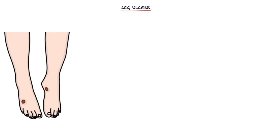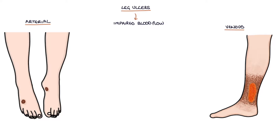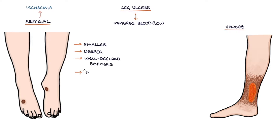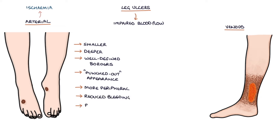Next, let's talk about leg ulcers. Leg ulcers indicate the skin and tissues are struggling to heal due to an impaired blood flow. Arterial ulcers are caused by ischemia secondary to an inadequate blood supply. Typically, arterial ulcers are smaller and deeper than venous ulcers, have well-defined borders giving them a punched-out appearance, occur more peripherally such as on the toes, have reduced bleeding, and are painful.